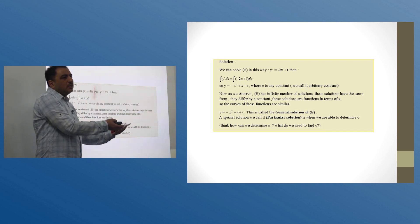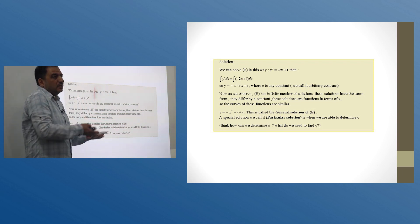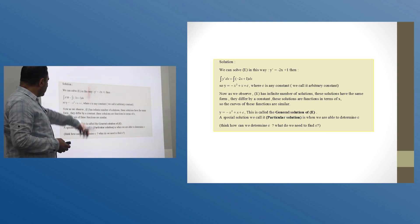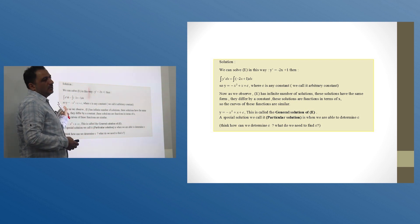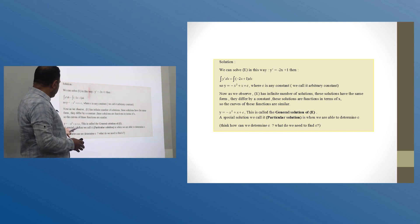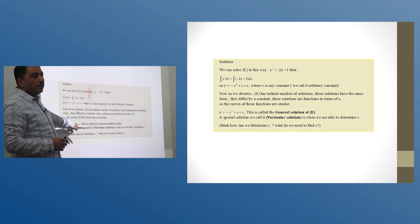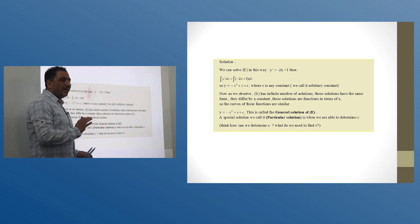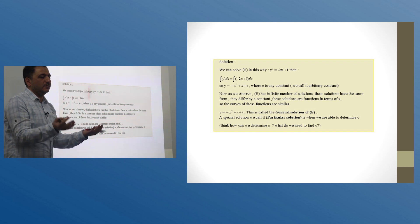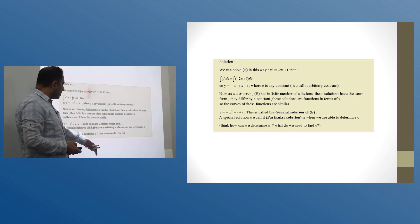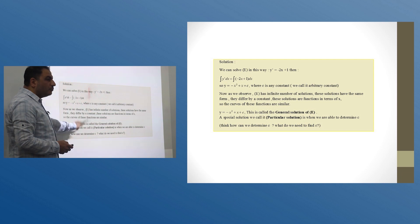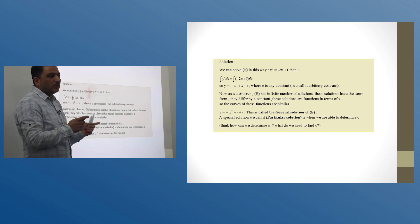c here is any constant. In differential equations, we usually use the term arbitrary constant, meaning it is a constant we may choose but it is not the only one. We observe that the equation has an infinite number of solutions because they differ from each other by the constant c. y = -x² + x + c is called the general solution of the equation. It is the general solution because we have found all possible kinds of functions that satisfy the equation.